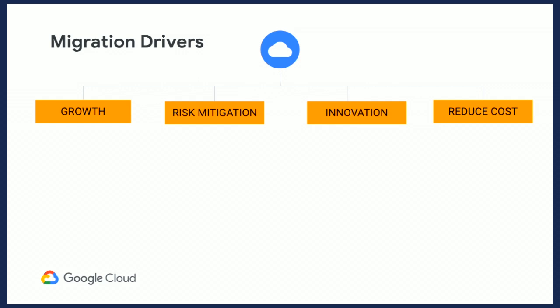The top driver is growth. A lot of organizations are looking to release new products and services to serve their end customers. They want the tools and capabilities to react to changing market conditions, and with the technology, you can serve your customers across the globe — whether they are sitting in Africa, Asia, or right here in North America. Risk mitigation is another driver — not only about preventing attacks to your system, but also meeting compliance and regulatory requirements around data residency, and having a secured platform and reliable infrastructure in case of any natural disaster. Google Cloud has regions across the globe, so you can bring your applications closer to your end customers.